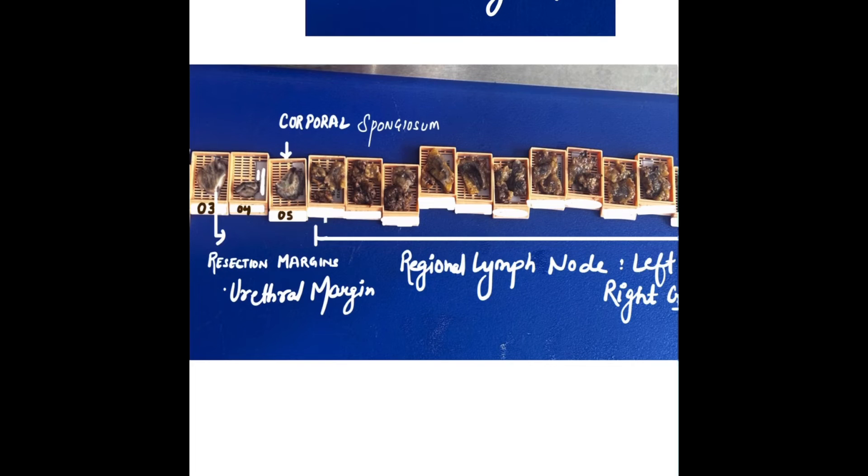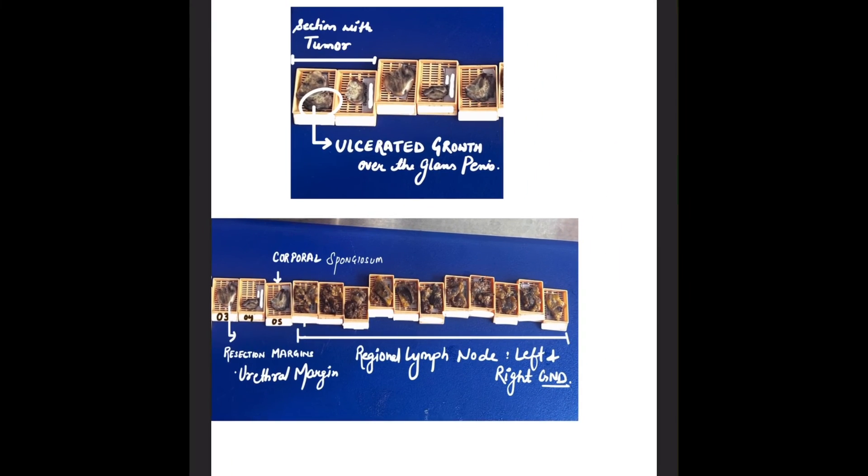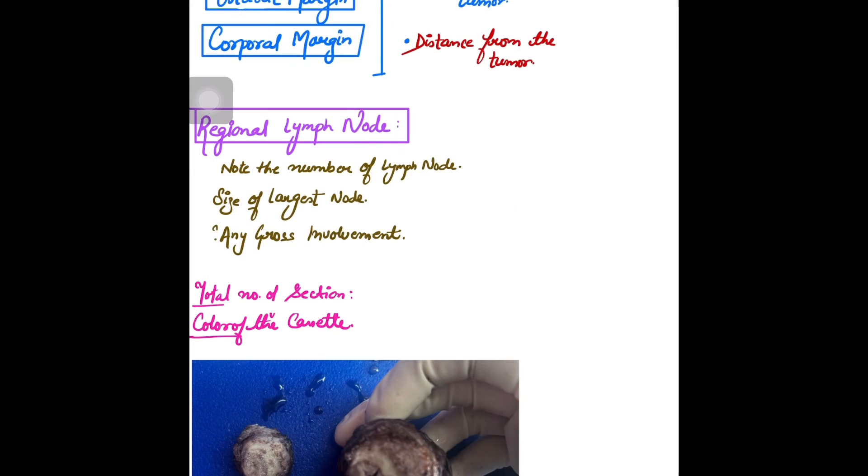Here's the groin nodes of left and right side. These are all the regional lymph nodes of the penis. For any regional lymph nodes, we have to mention the number of lymph nodes we have, along with the size of the largest node.